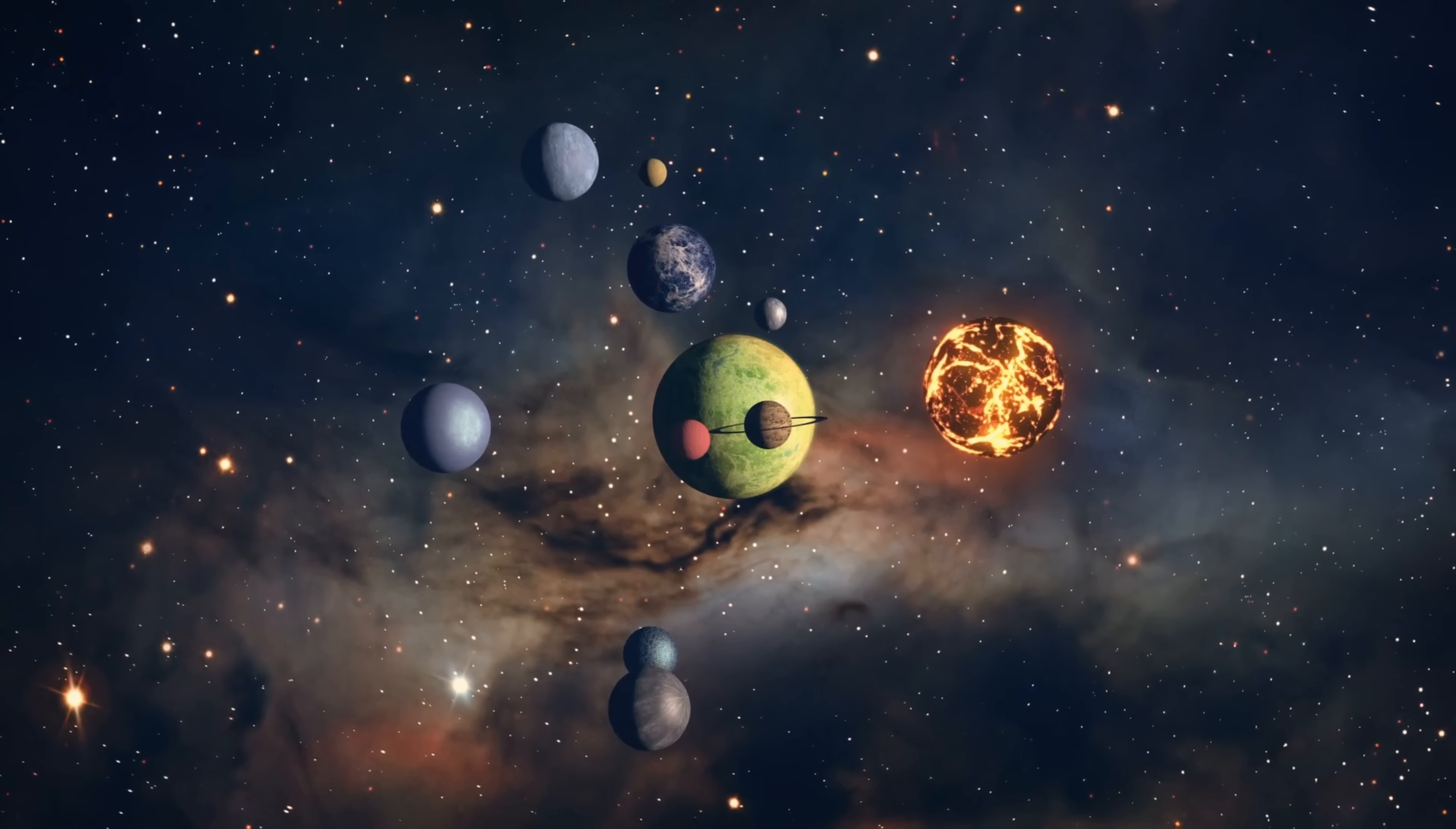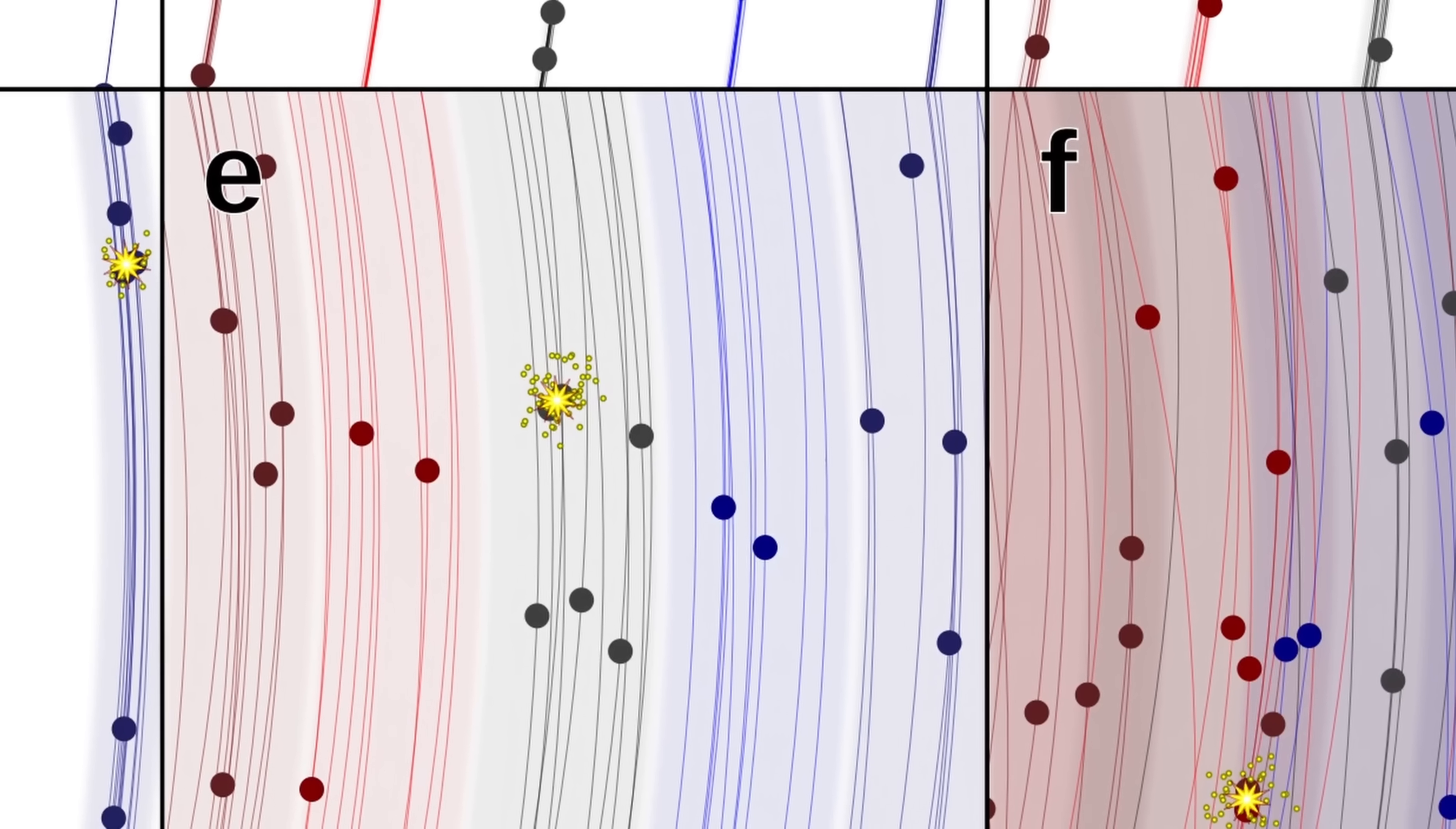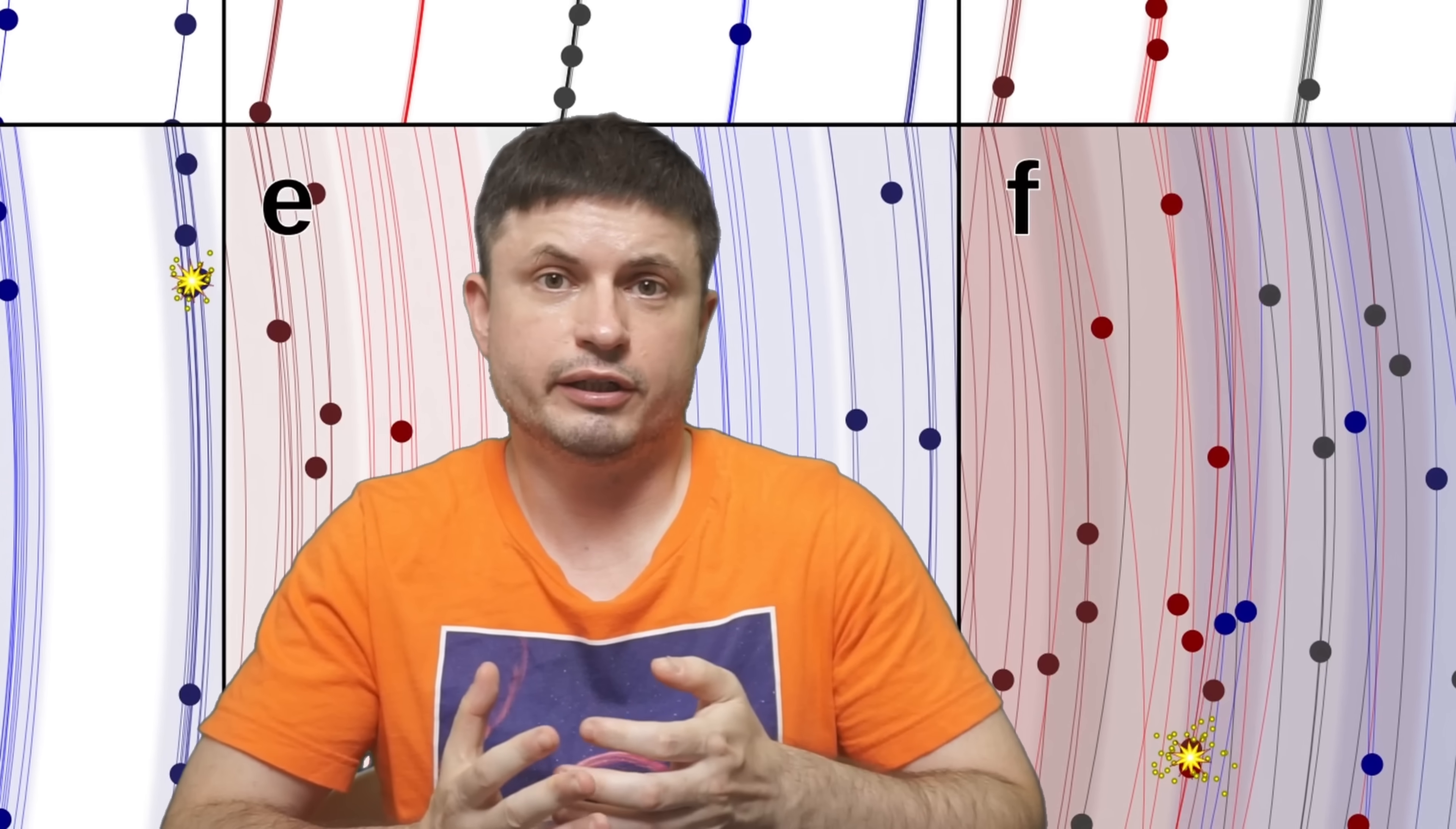And so according to the math in the study, in a typical binary system or in a typical system containing a planet, within just a few hundred thousand years, maximum a million years, there will be at least a few possible collisions, with one collision most likely cascading into a kind of a chain reaction.